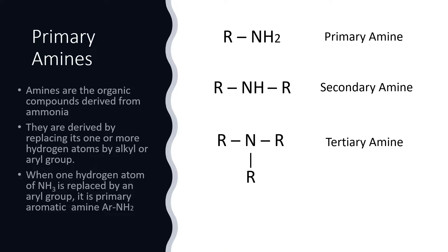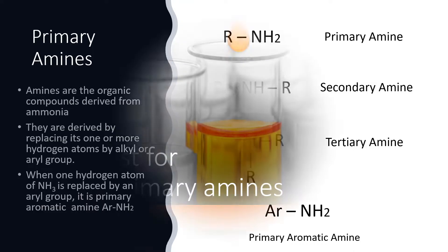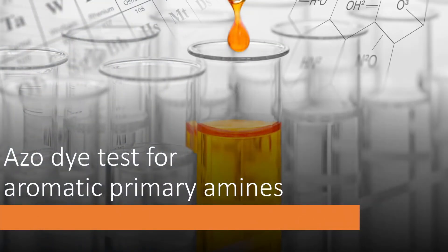When one hydrogen atom of ammonia is replaced by a phenyl or aryl group, the compound obtained is a primary aromatic amine. In this video we will discuss the azo dye test for testing such compounds — that is, aromatic primary amines.